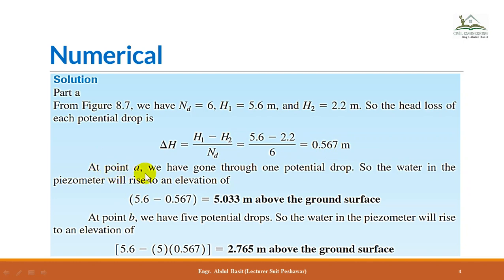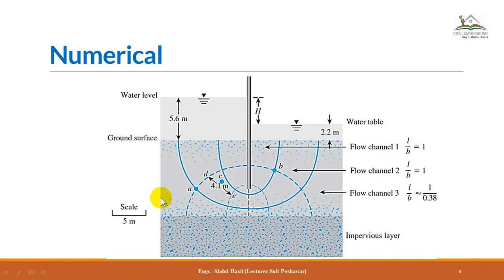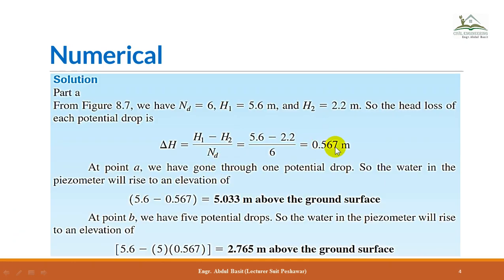At point A, the water in the piezometer will rise to an elevation equal to the head at the first potential drop. From the diagram, point A lies on the first equipotential line, so the piezometric head equals 5.6 minus 1 multiplied by 0.56, giving the piezometric head above ground level in meters at point A.